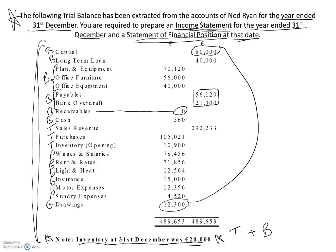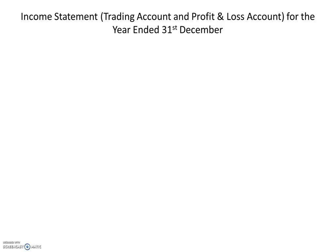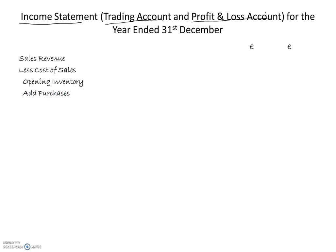Now we will have a look at the income statement. We construct our income statement, and remember there are two components to it: the trading account and the profit and loss account. We will start off with the trading account component. The trading account is made up of sales, and then you take away the cost of sales, which is calculated as opening inventory plus purchases less closing inventory. So these three items give us the cost of sales figure, which we take away from sales to get the gross profit.